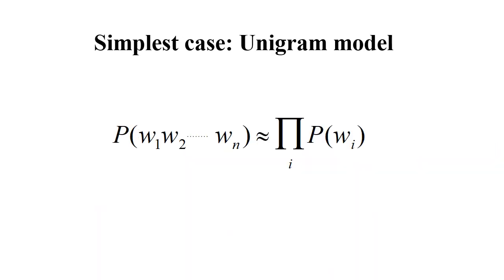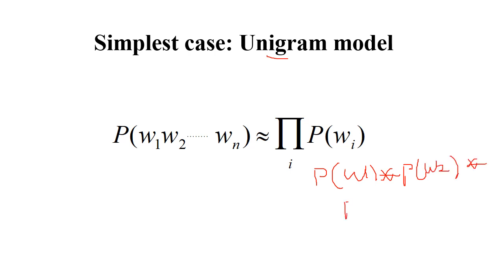The simplest case is the unigram model. Here the probability of a sequence of words W1, W2, ..., WN is simply the product of the individual word probabilities: P(W1) times P(W2) times P(W3), and so on.